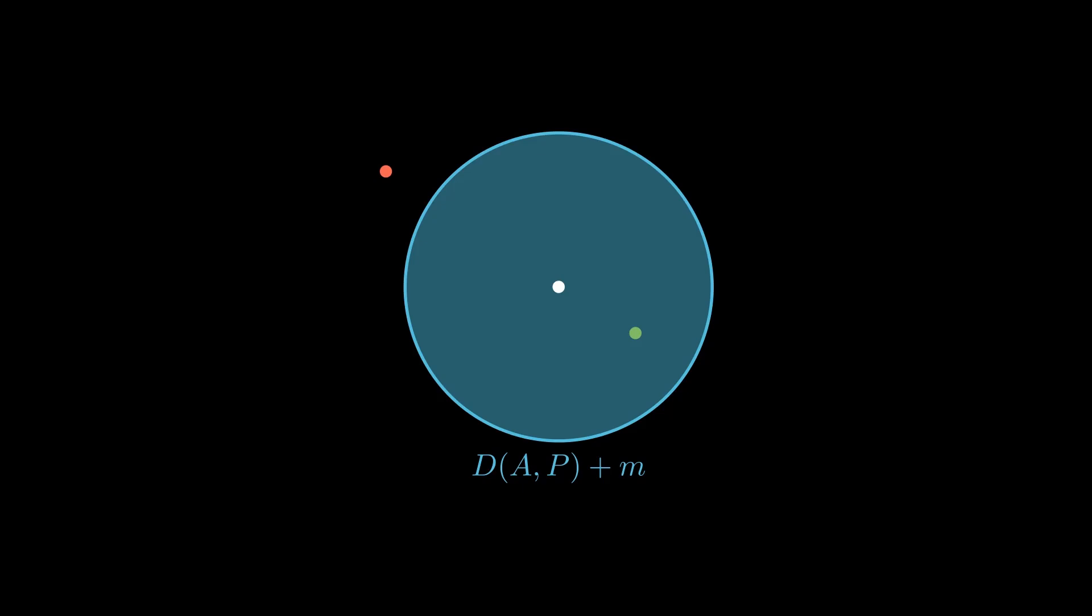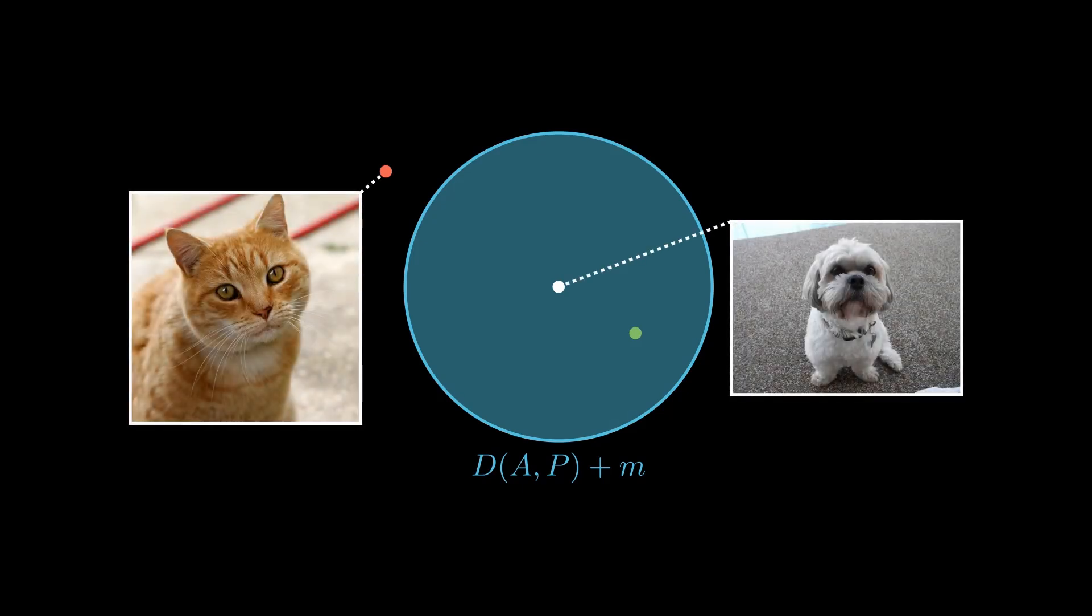These are cases where the model still struggles, for instance, a negative very close to the anchor. Let's say we have two classes, cats and dogs. Here, the negative instance is very different from the anchor, but we can actually choose some cat images that resemble dogs.